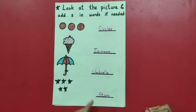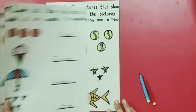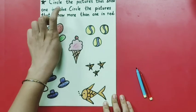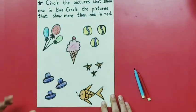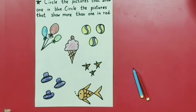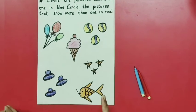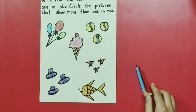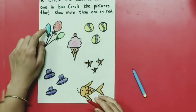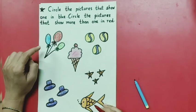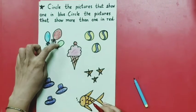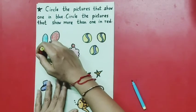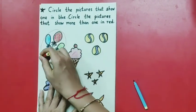The spelling will change — it will become 'stars'. Moving to our next activity. Look here — circle the pictures that show one in blue, and circle the pictures that show more than one in red. We have to circle in red colour when there are many, and in blue colour when there is only one. Now which picture is this? Balloon. You can count: 1, 2, 3 — means many are here. So we circle this picture with red colour.